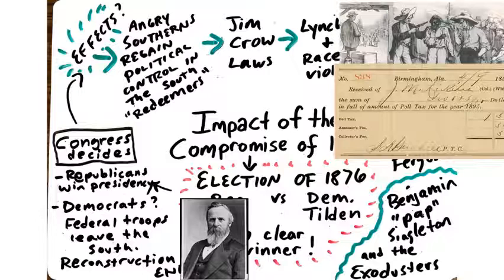These Jim Crow laws are going to be legally allowed by the United States in a huge Supreme Court case known as Plessy versus Ferguson, where the Supreme Court says that southern states can segregate their societies as long as they are separate but equal. That's the big Supreme Court case that comes out of the end of Reconstruction.